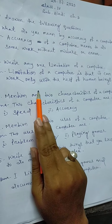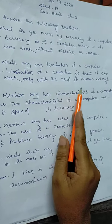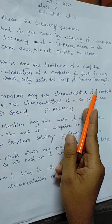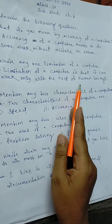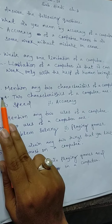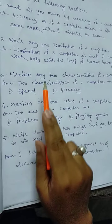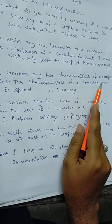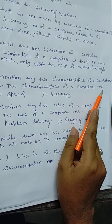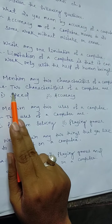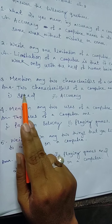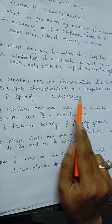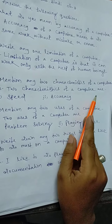The answer is: A limitation of a computer is that it can work only with the help of human beings. The third question is: Mention any two characteristics of a computer.